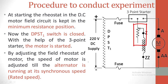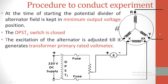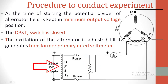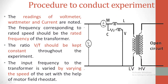By adjusting the field rheostat, the speed of the motor is adjusted such that the synchronous generator rotates at synchronous speed. For the synchronous generator, at the time of starting, the potential divider in the field circuit is kept in the minimum voltage position. The DPST switch is closed. We adjust the excitation until the generator generates the rated voltage of the transformer. The readings of voltmeter, wattmeter, and ammeter are noted.